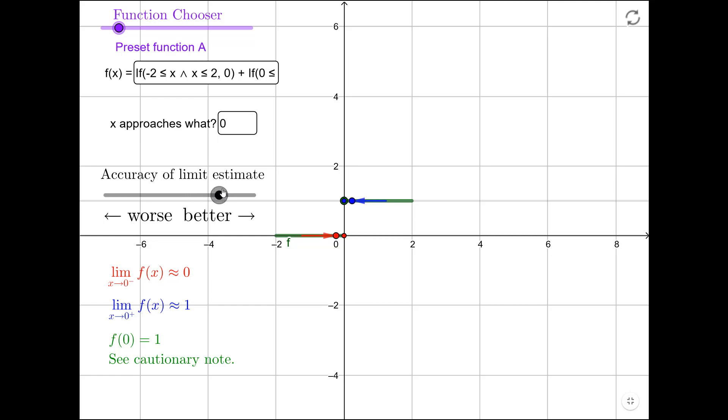As x approaches 0 from the left, it looks like our function value approaches 0 and that's indicated here by the statement the limit as x approaches 0 from the left of f(x) is approximately 0. I'm saying approximately here because I am using technology to estimate something and technology often struggles with these limit and continuity type issues. But in this case, it's correct.